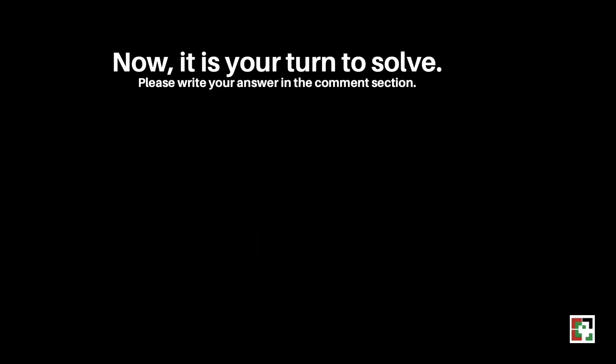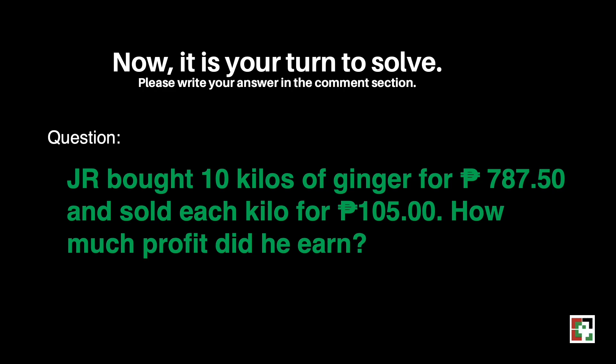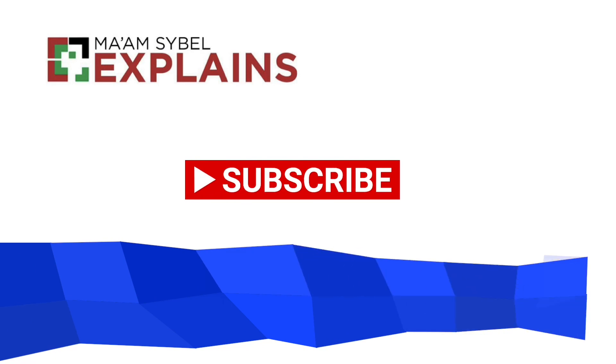Now it is your turn to solve. Please write your answer in the comment section. The question is: JR bought 10 kilos of ginger for 787 pesos and 50 centavos and sold each kilo for 105 pesos. How much profit did he earn? I'll be waiting for your answer. Thank you! Don't forget to hit the like button if you think this is helpful. Till next time!